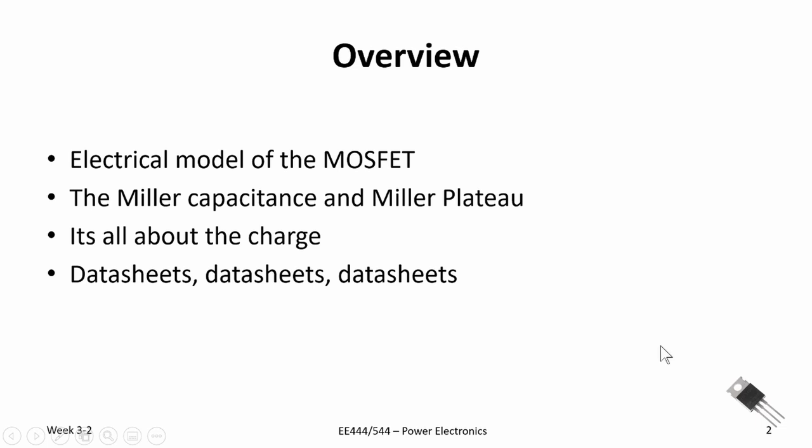First, we're going to look at an electrical model of the MOSFET and put capacitance into that model. These capacitances arise from separation of charge in the semiconductor device. The gate-to-drain capacitance is really what controls the turn-on and turn-off time — it's called the Miller capacitance — and we end up with what's called the Miller Plateau. Then we'll talk about the charge and show diagrams on how MOSFETs turn on and the amount of charge required, and finally finish up with a simple example.